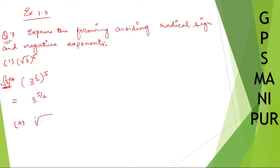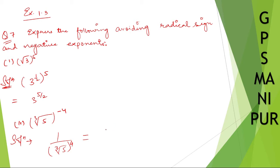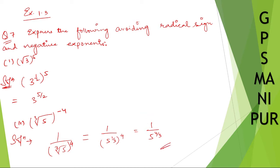Roman number two: we have the cube root of five to the power minus four. We are going to remove the minus sign. To do that, write one divided by root five to the power four — minus four becomes positive four. Then root three of five gives one-by-three as the power, so we write one by five to the power four by three. This is your answer.